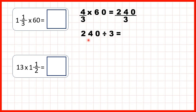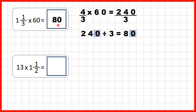If we divide 240 by 3 we get 80, because 24 divided by 3 is 8, and having the trailing zero in the dividend means we get a trailing zero in the quotient. So our answer is 80. This shows that sometimes when we multiply a mixed number by a whole number we can still get a whole number as our answer.